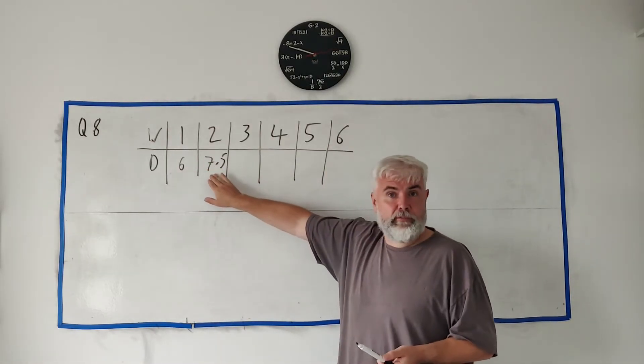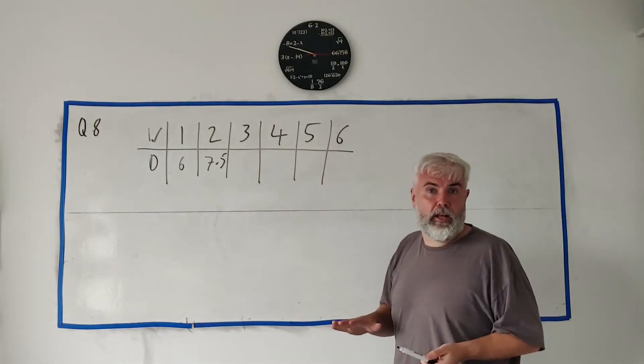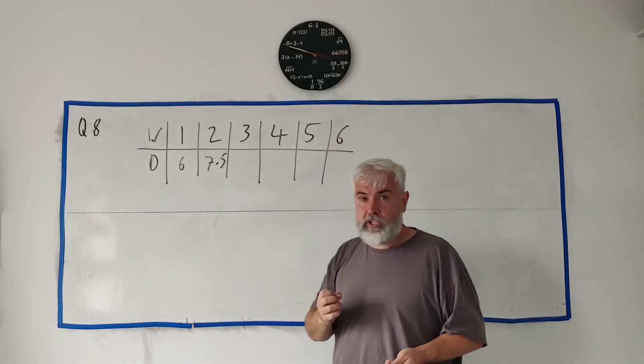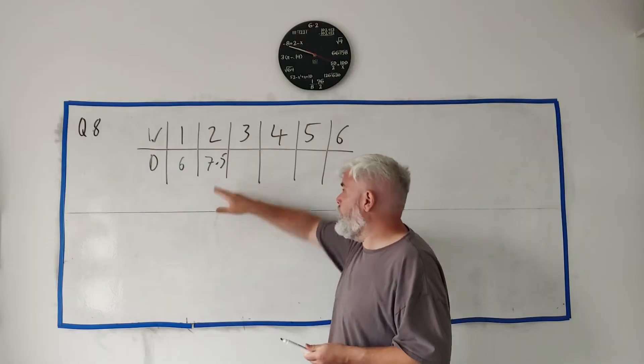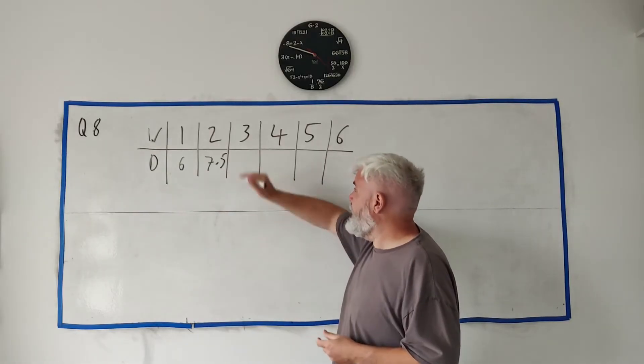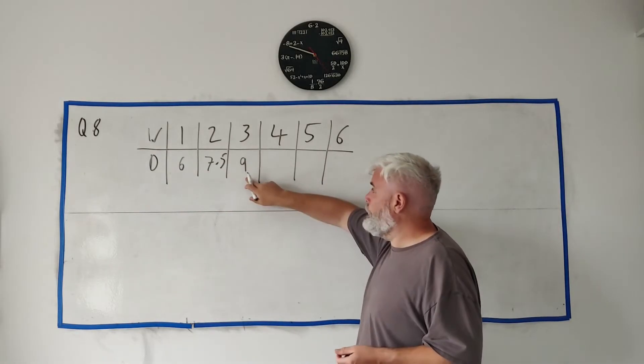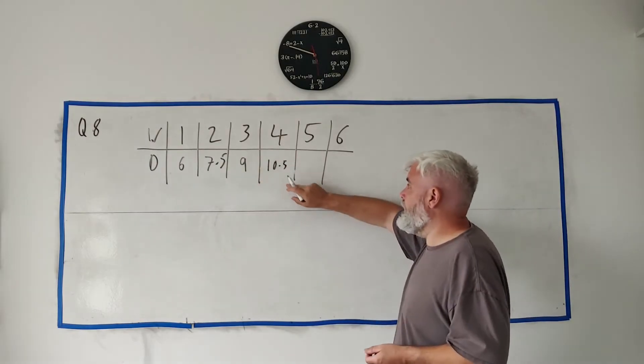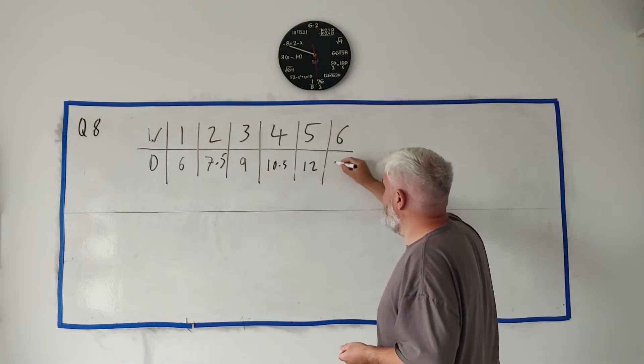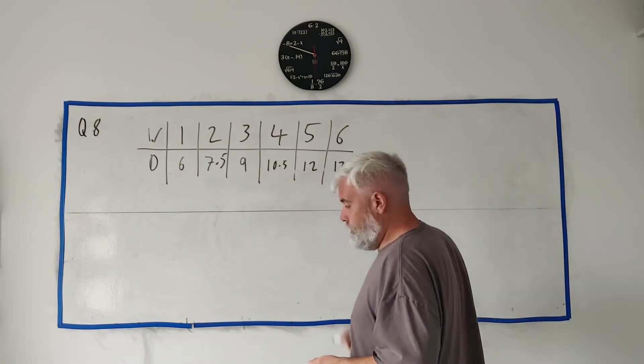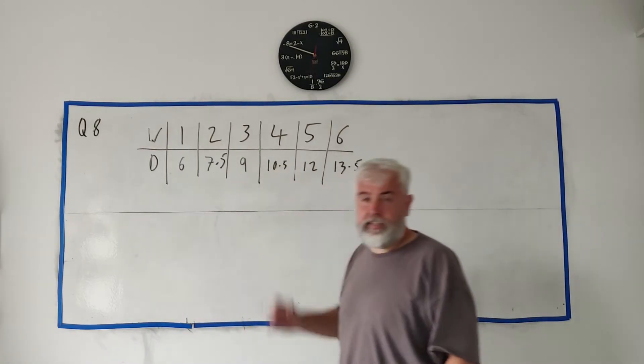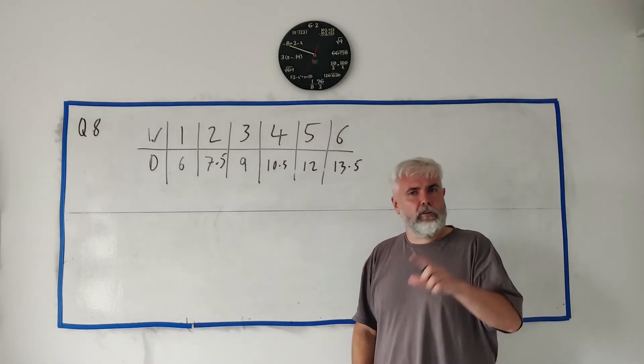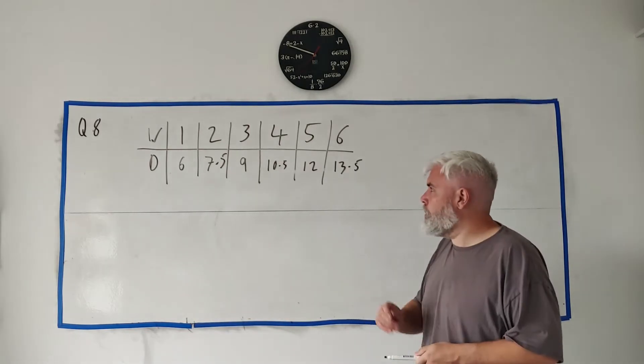They want to continue this table on, so every week she wants to run 1.5 more. 1.5 more than 7.5 gets us to 9, 1.5 more gets us to 10.5, 1.5 more gets us to 12, and then 13.5. Yeah, that continues on this table.